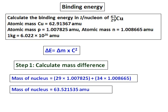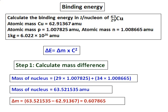Be careful to put the correct atomic mass for the proton and the neutron. The mass of the nucleus comes as 63.521535 amu. This should have been the mass if there were no forces in it and we had only protons and neutrons. But the atomic mass of copper is found to be 62.91367, and therefore the difference in the mass is calculated and that comes as 0.607865.